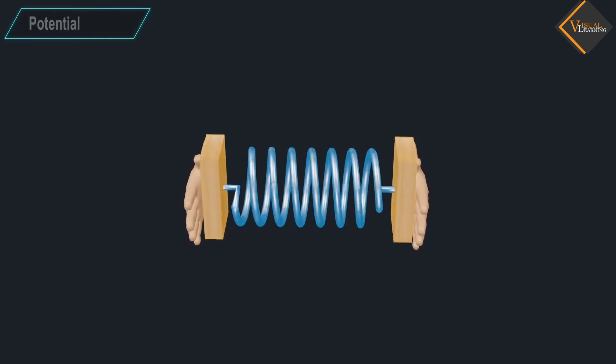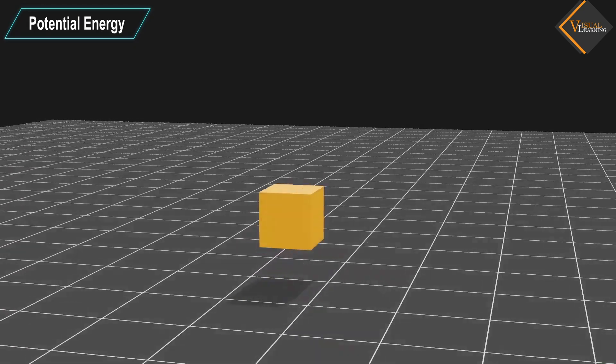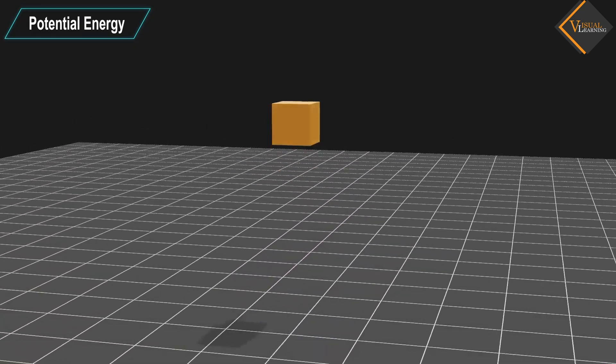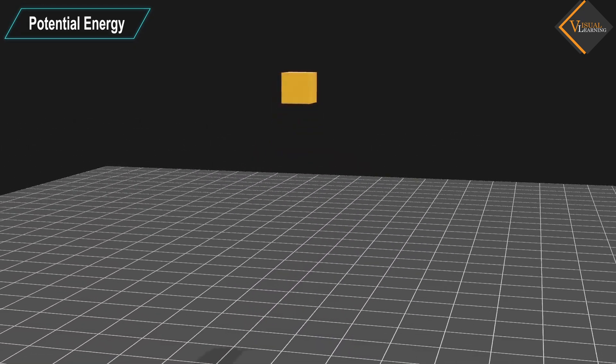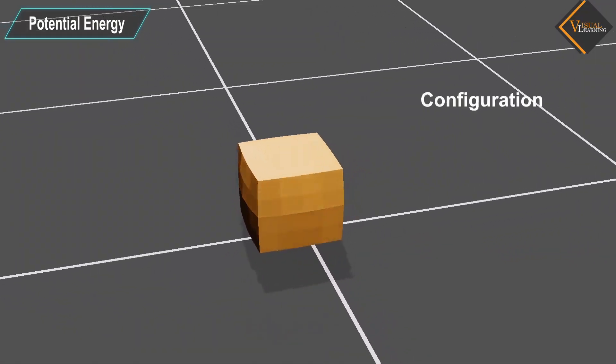In this video, we will understand potential energy. The potential energy possessed by the object is the energy present in it by virtue of its position or by virtue of its configuration.